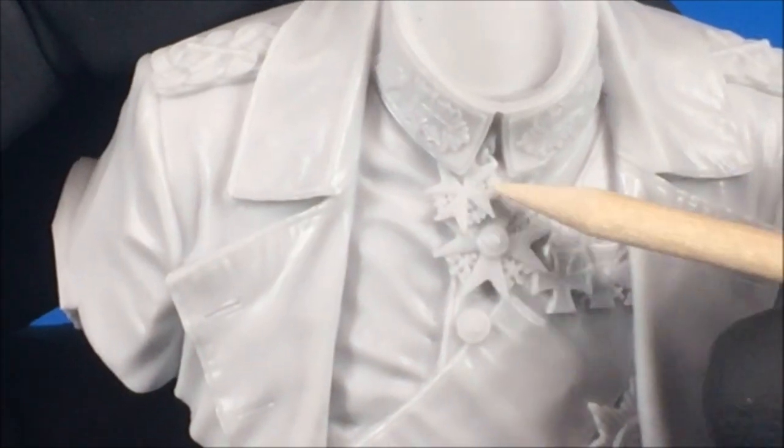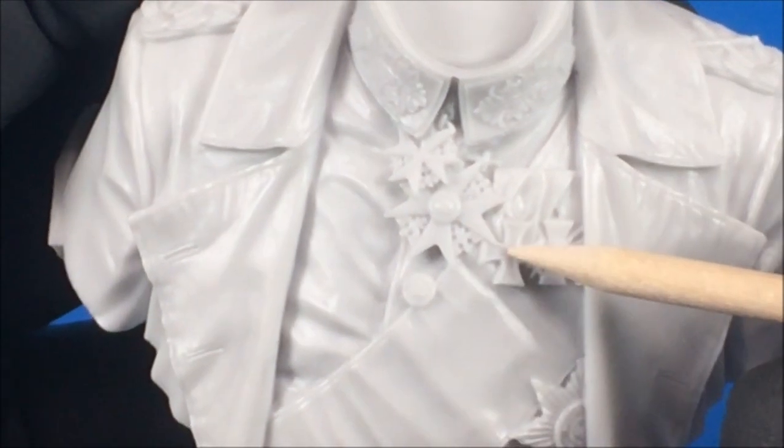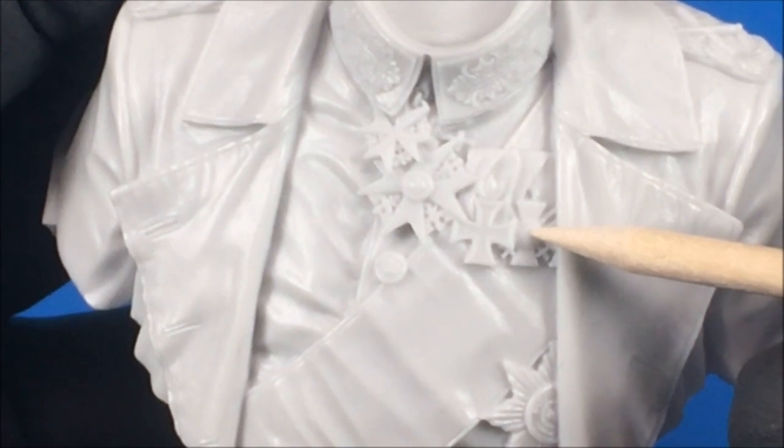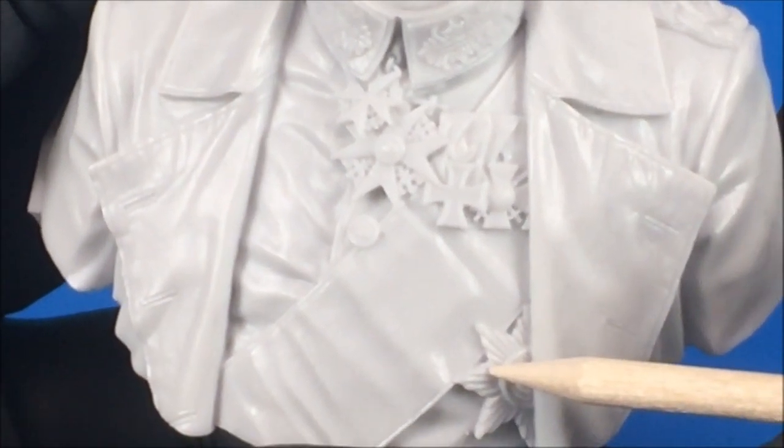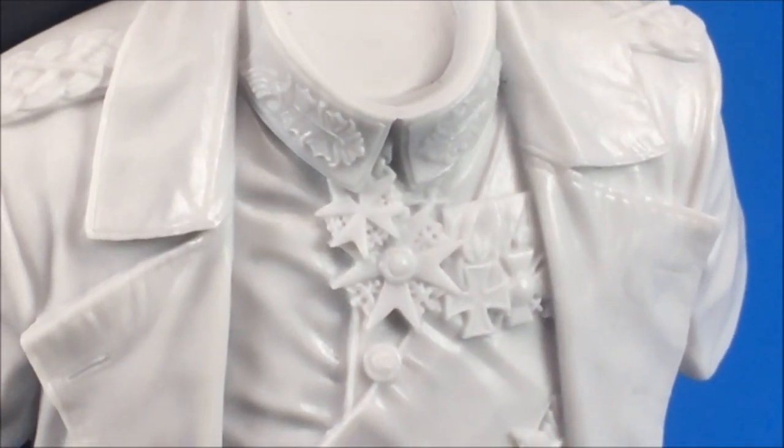You can see all the detail on the medals is expertly crafted. And the first medal up here is the Blue Max. And this is the Red Eagle Order. This is the Iron Cross 1914. This is the Order of the Red Eagle with crossed swords. And down here, we have the Order of the Black Eagle. And here you can see some detail on the buttons. They've even added that detail in. That is some quality casting and sculpting, as I'm sure you'll agree.